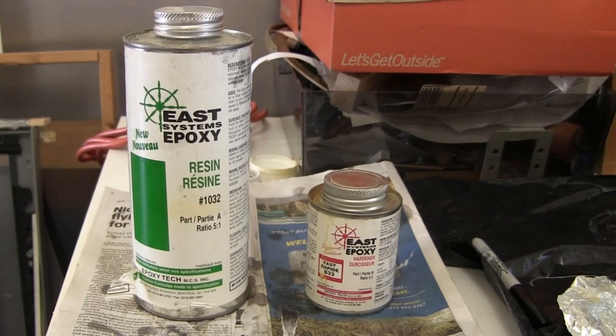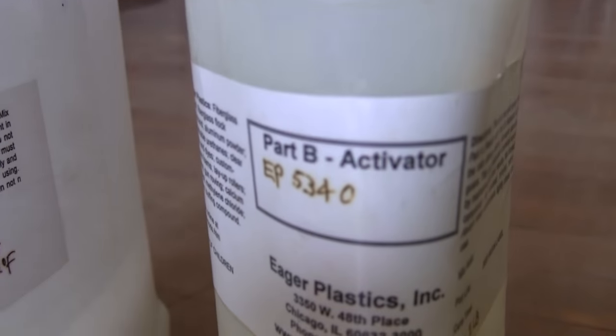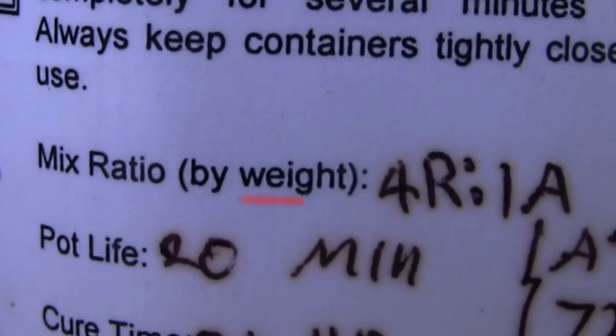Around this time I ran too low of that resin and switched to another one I'd had sitting around, consisting of one bottle marked resin and the other activator. On one bottle it says to measure them by weight this time, instead of by volume, with the ratio of 4 part resin to 1 part activator.